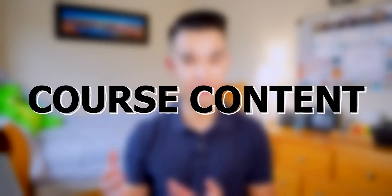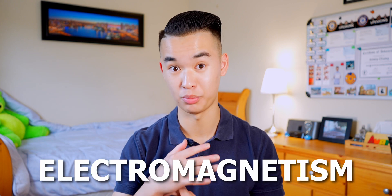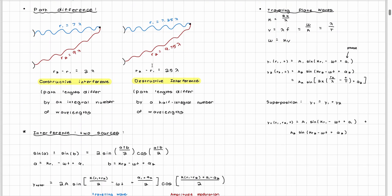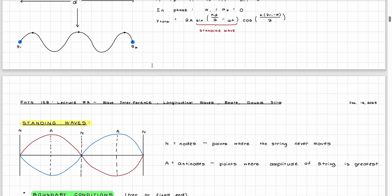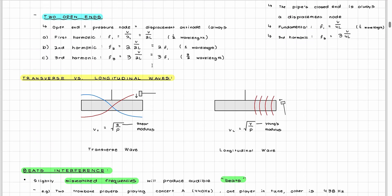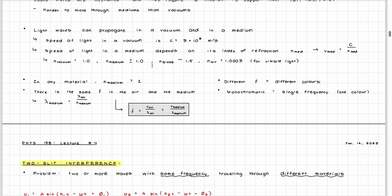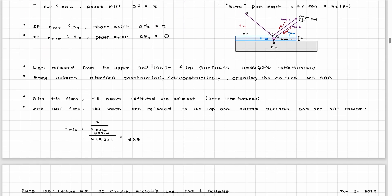Now let's get into what you're actually going to learn in Physics 158. There are 13 weeks in the term, and the course is sectioned off into 3 different topics: Waves, Circuits, and Electromagnetism. In the first 2 weeks of the course, you'll expand on the Waves content introduced in Physics 157, covering concepts such as Wave Interference, Longitudinal Waves, Beats Interference, Double Slit Interference, and Thin Film Interference.